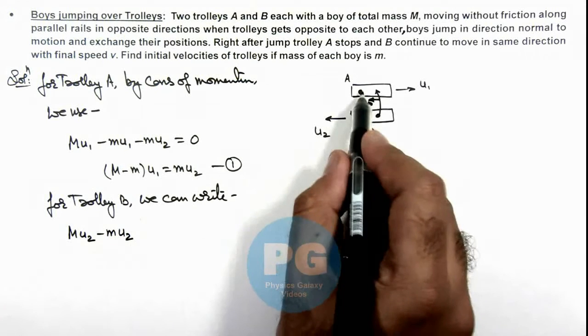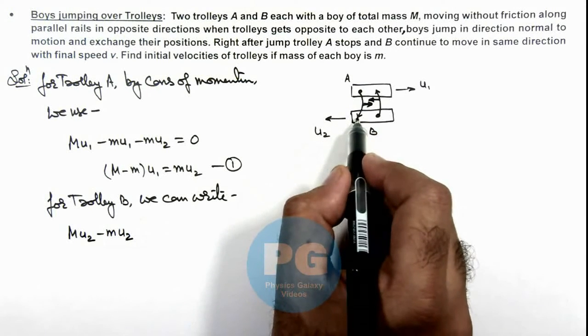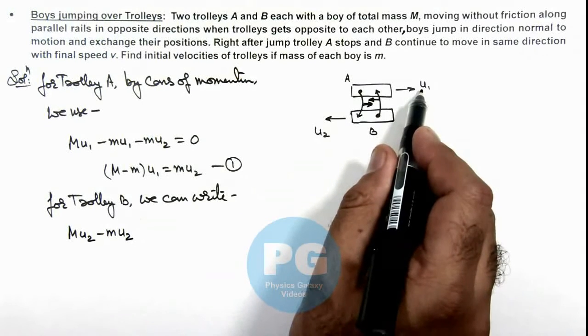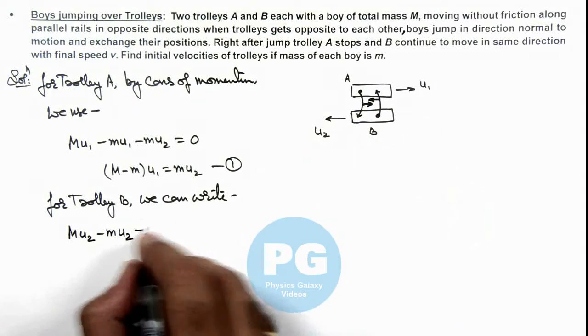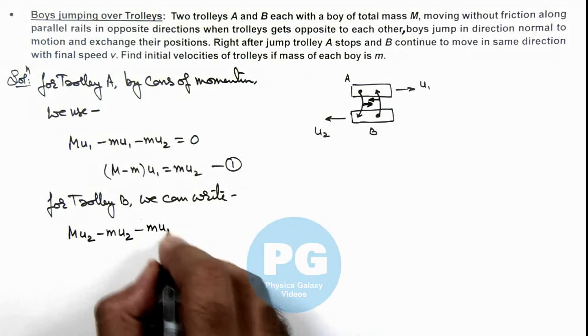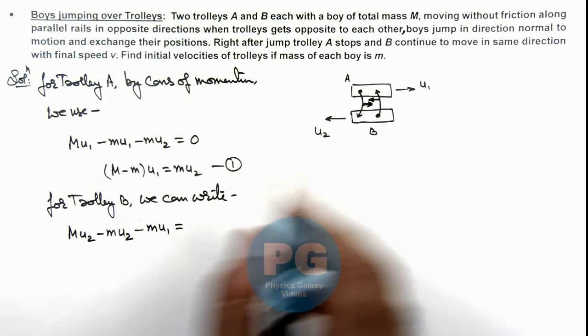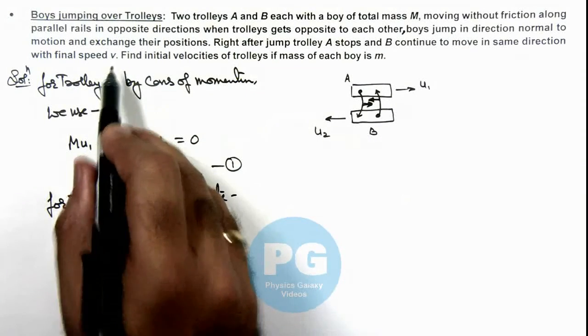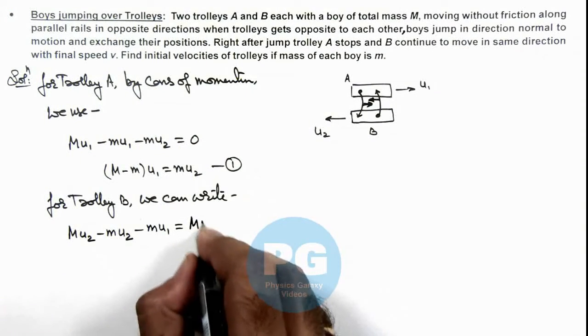And the boy of A, when it lands on trolley B, it is traveling with the velocity u1 in opposite direction, so again it brings a momentum minus m·u1. And finally the body B is traveling in the same direction at speed v, so it can be written as M·v.